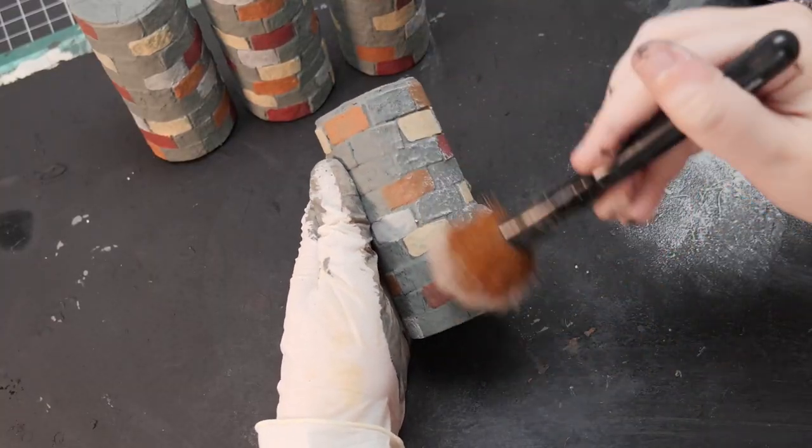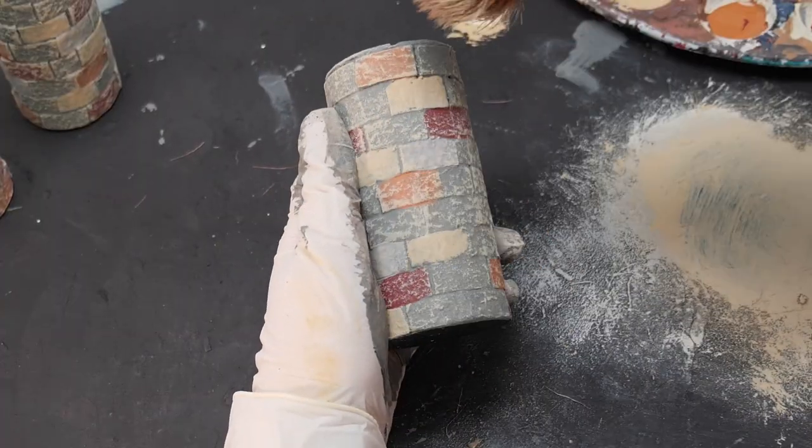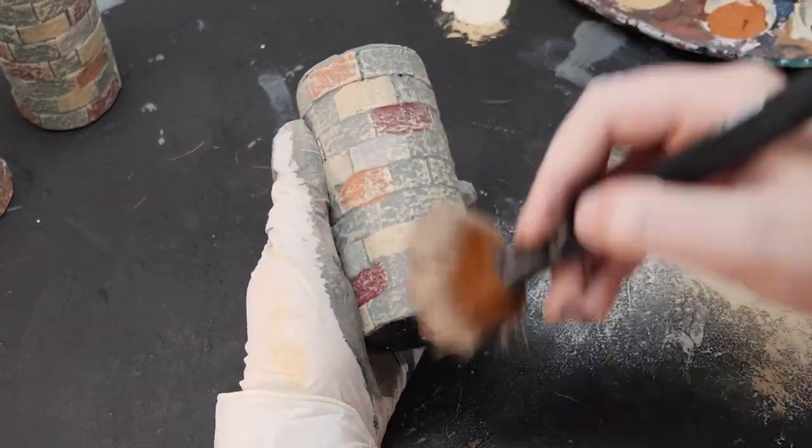Now to bring out the details I did an overall dry brush with a tan. And this step really lets the texture of the egg cartridge shine through.